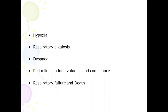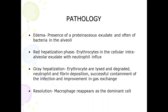Moving on to pathology — what happens in the alveoli? There are four phases in pneumonia. First is the edema phase, with proteinaceous exudate and often bacteria in the alveoli. The second is red hepatization, with erythrocytes in the cellular intra-alveolar exudate with neutrophil influx. Third is grey hepatization, where erythrocytes are lysed and degraded, with neutrophil and fibrin deposition. Finally, the fourth phase is resolution, in which macrophages reappear as the dominant cell.